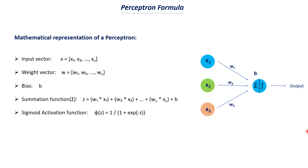When it comes to a perceptron, it contains an input vector and a weight vector. The input vector is nothing but the input features in a dataset, and the weight vector represents the weightage of those individual inputs. So w1 represents the weightage of x1, w2 represents the weightage of x2, and so on. Then you have a bias factor that we add to this weighted sum.